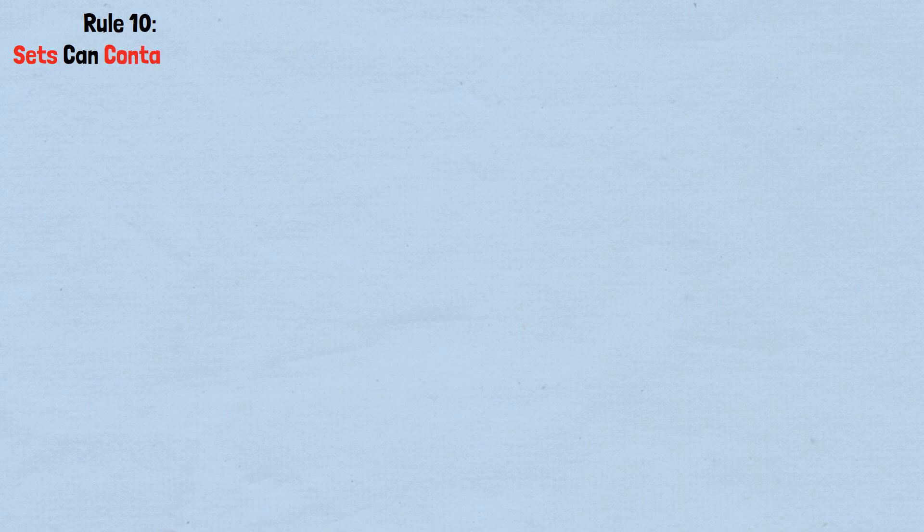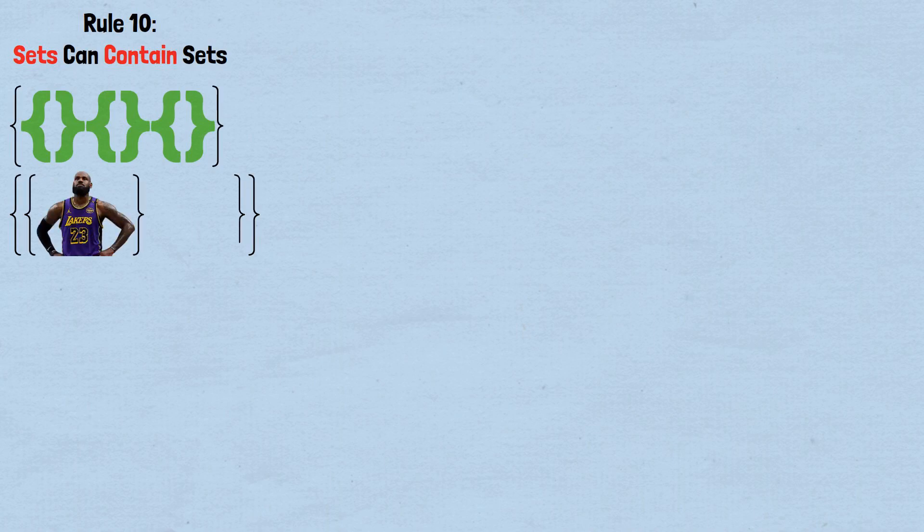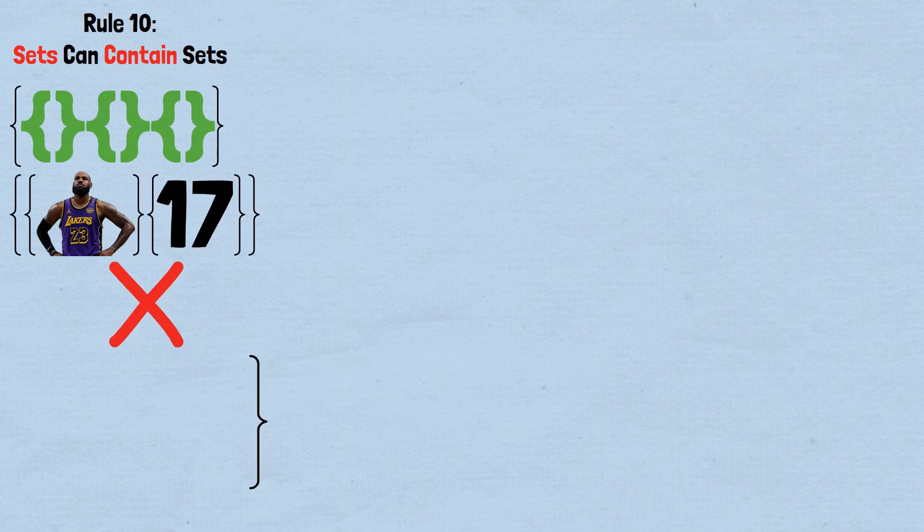Rule 10, sets can contain sets. We can have sets of sets. For example, the set of all singleton sets includes sets like {LeBron James} and {17}, but it does not contain LeBron James or the number 17 directly.